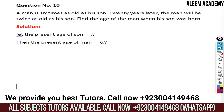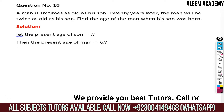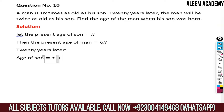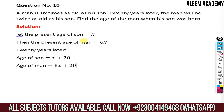Now, after 20 years: the age of son will be x plus 20, and the age of man will be 6x plus 20. These are the ages after 20 years.